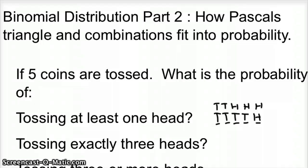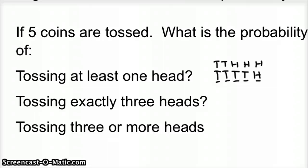The last question leads into part three. Part three is going to address what happens when tails and heads don't have a 50-50 chance — for example, weather where each day only has a 10% chance of rain, and you want to know the probability of at least one rainy day over a five-day period. What happens when the probability is not 50-50? That's the next video. Good luck, I hope this helps. See you next time.